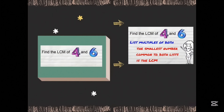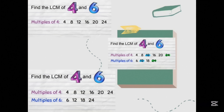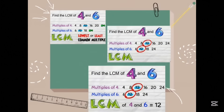Let's find the LCM of 4 and 6. We are going to list multiples of both 4 and 6 and look for the smallest number common to both lists. Multiples of 4: 4, 8, 12, 16, 20, 24. Multiples of 6: 6, 12, 18, 24. I can see that 12 and 24 crop up in both listings. LCM means the lowest common multiple, and the smallest number in both lists is 12. So the LCM of 4 and 6 is 12.